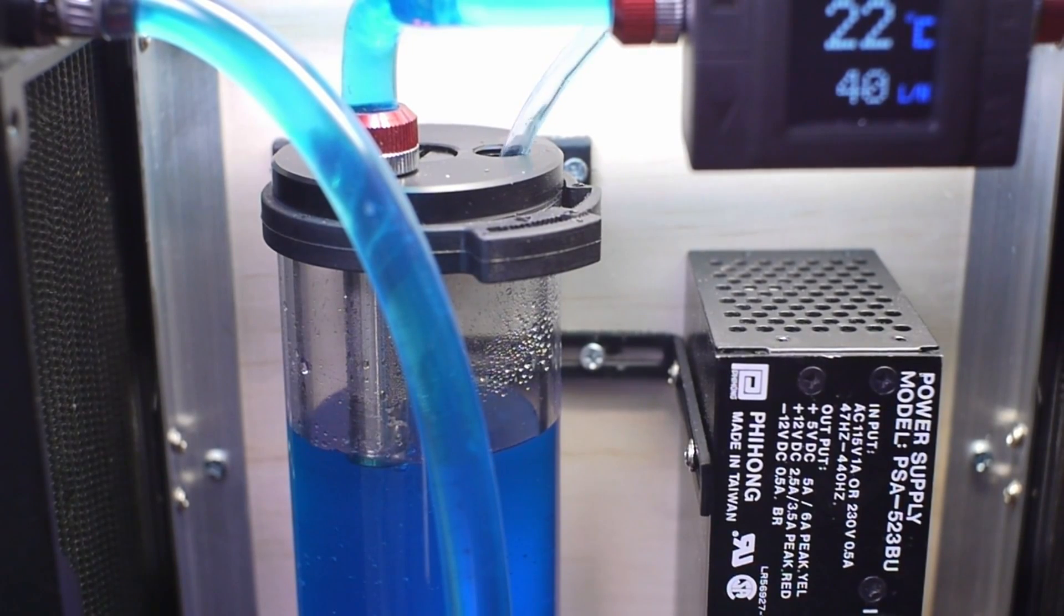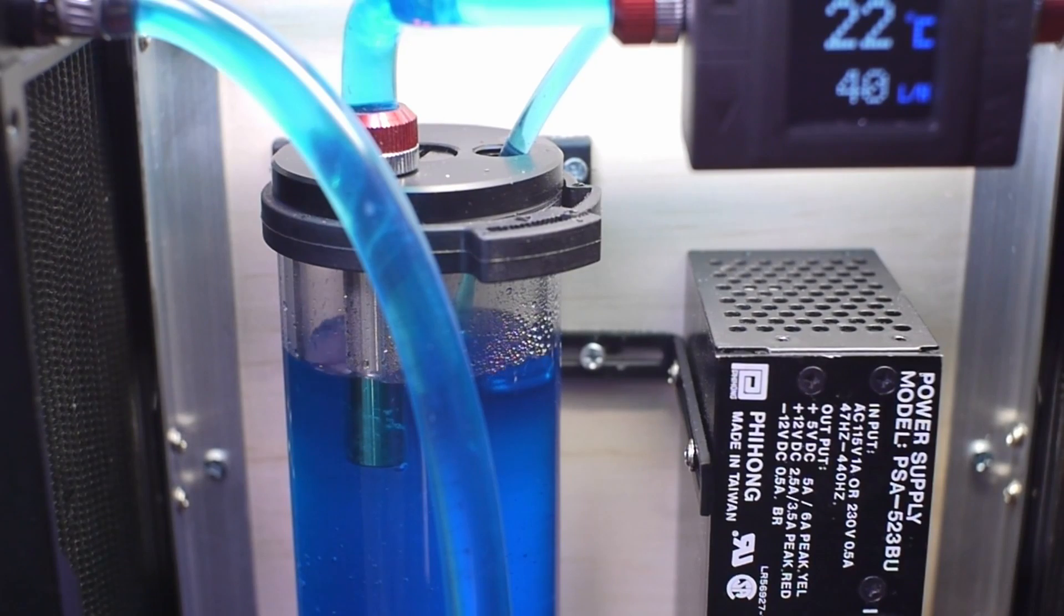Once I was confident that I had gotten all of the air bubbles out of the system, I went ahead and filled up the reservoir above the fill tube to make sure that when I turned it off, it wouldn't backflow air into one of the radiators.